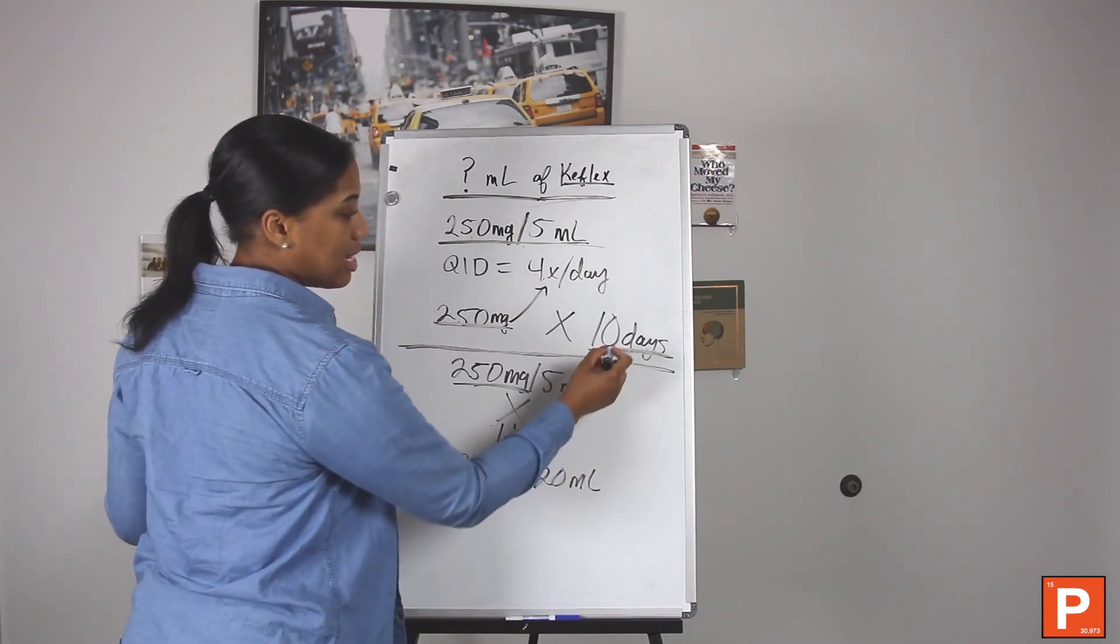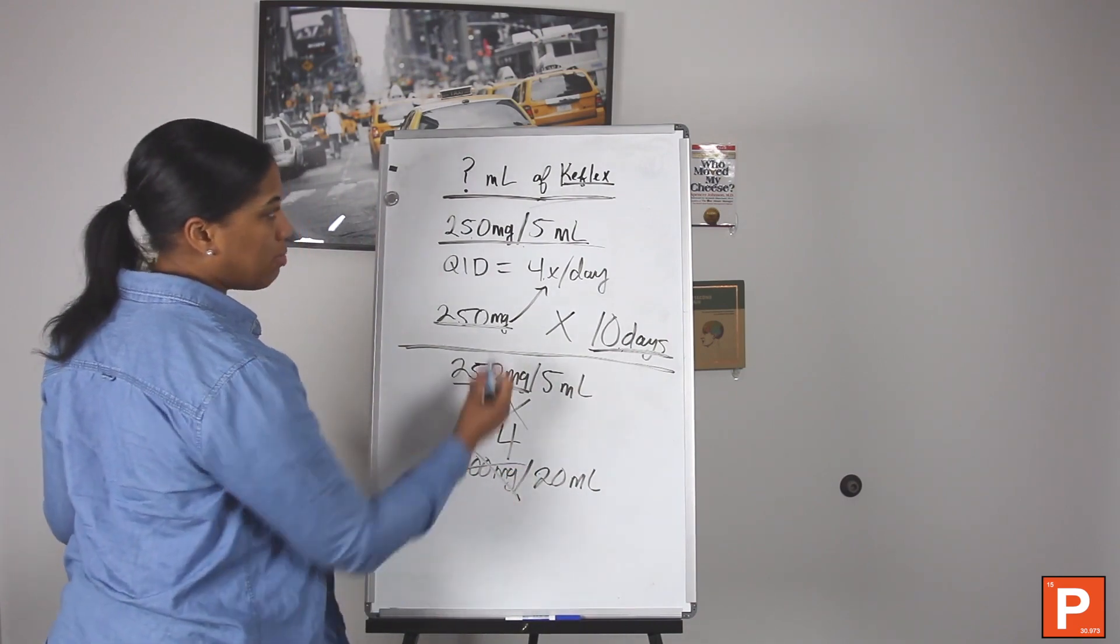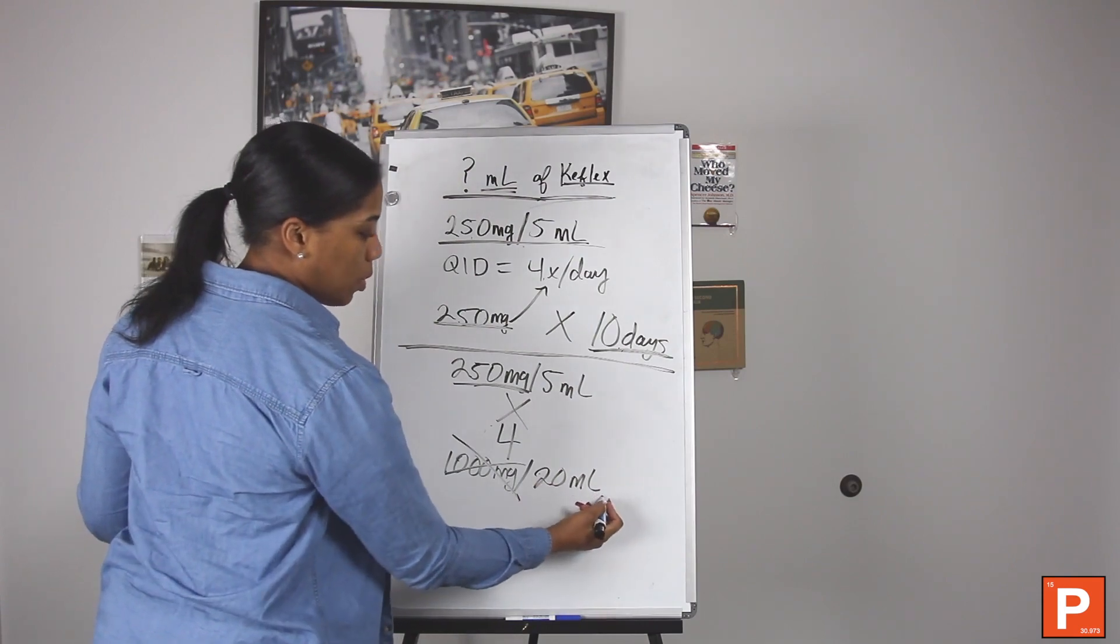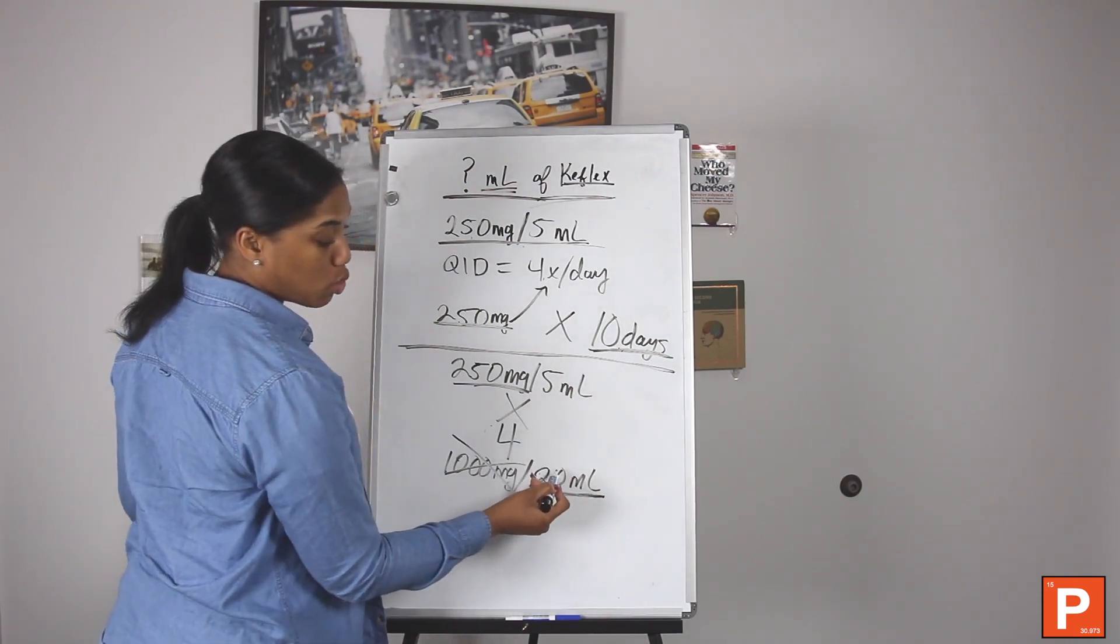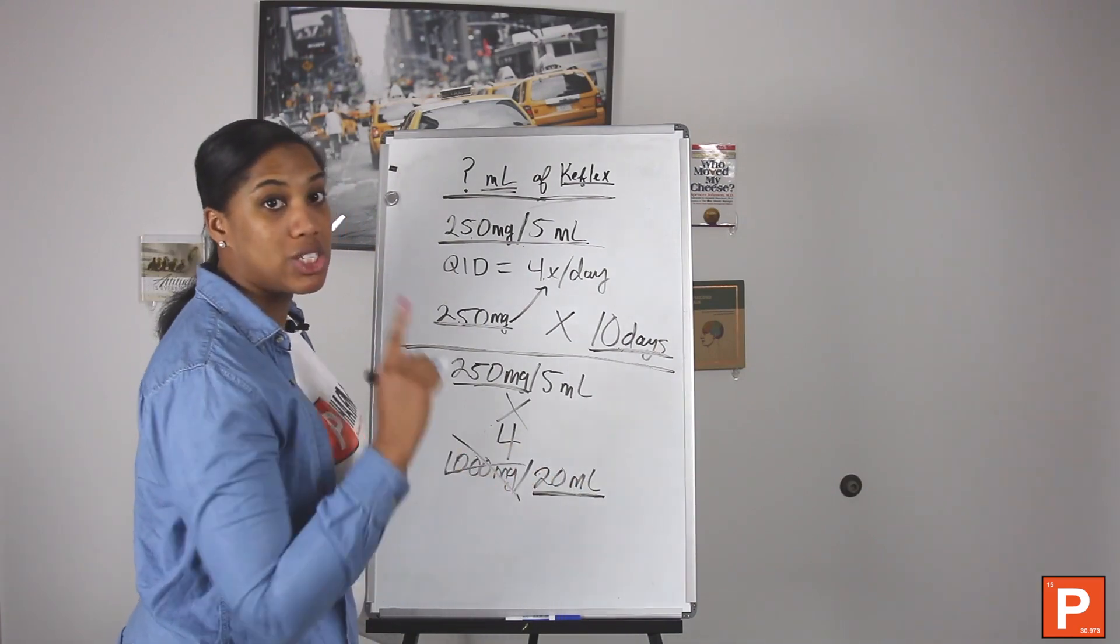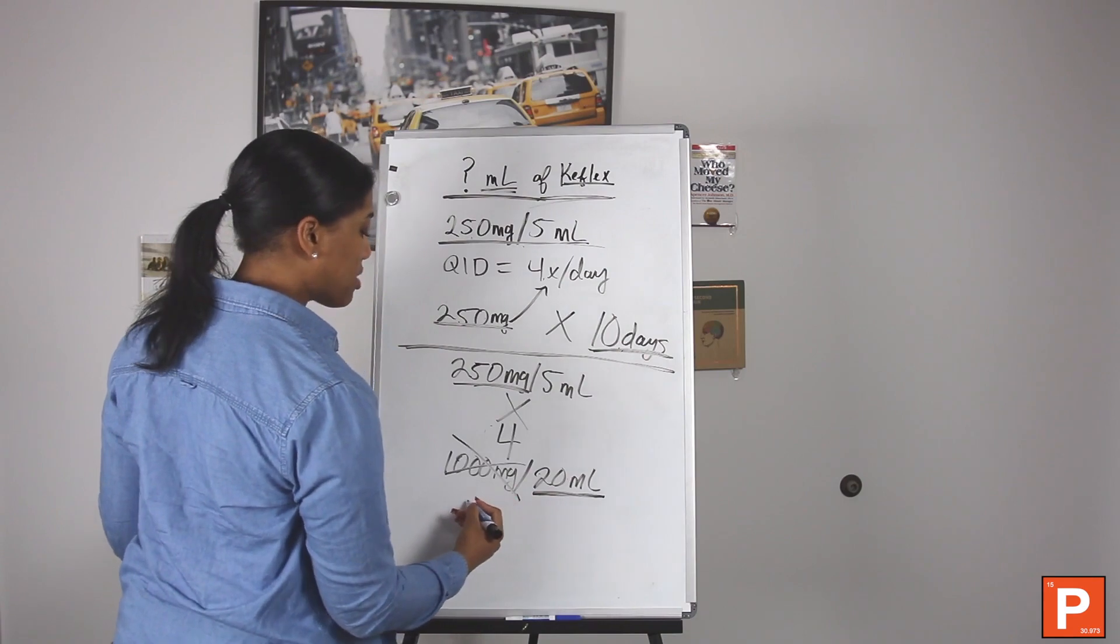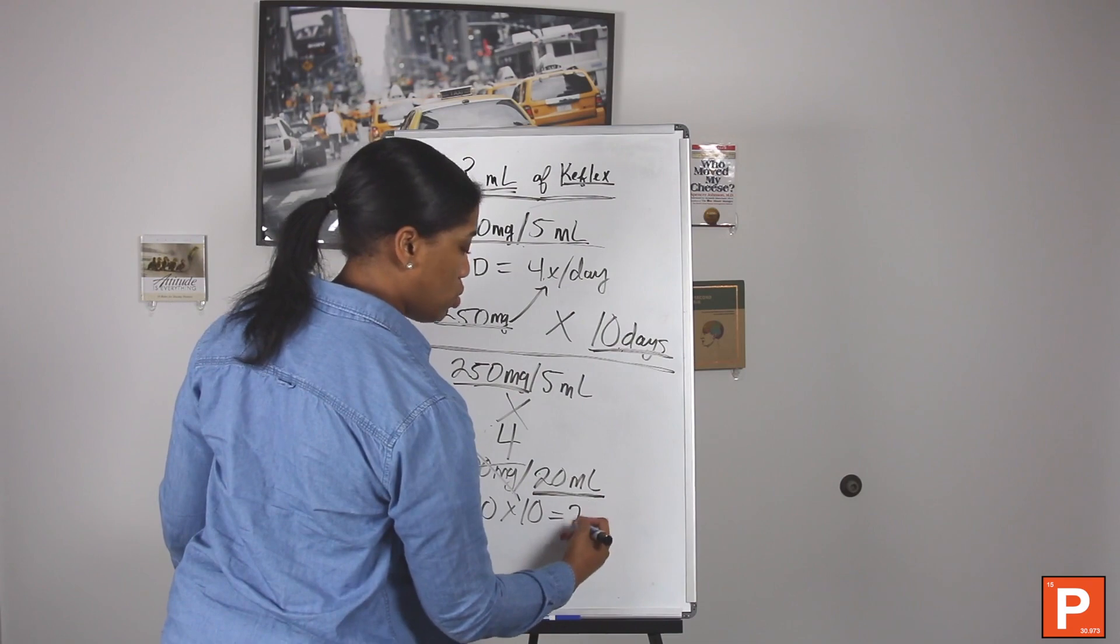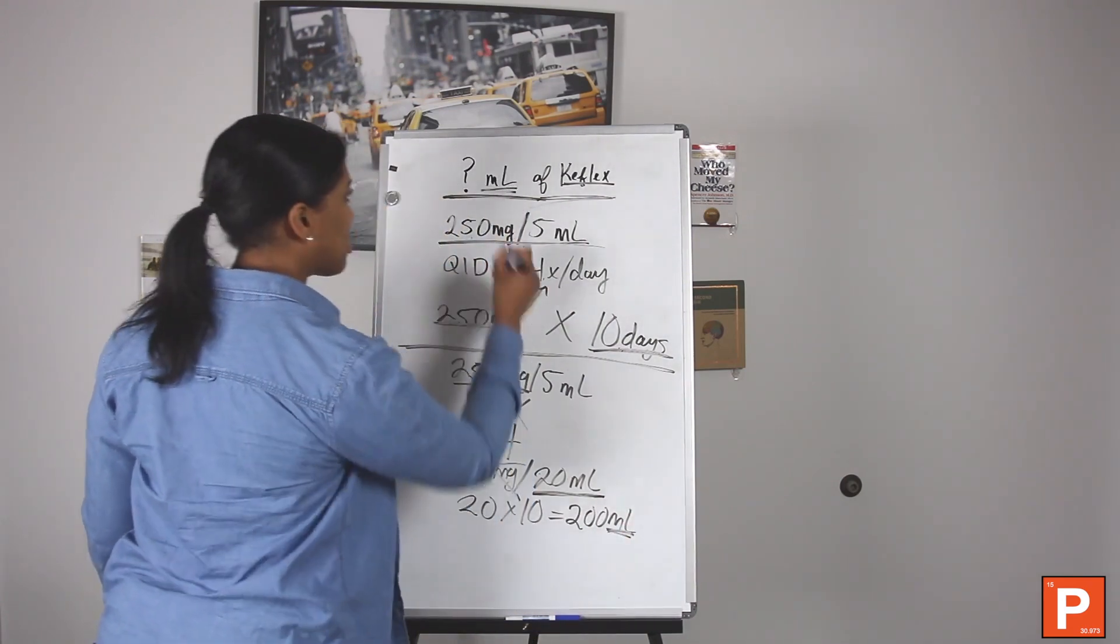This is for how many days? 10 days. So we don't even need this mg anymore because they asked how many milliliters. We would basically take this 20 and multiply it, because this 20 milliliters represents how much the patient needs for one day. Now we need to know how many for 10 days, so basically you would say 20 times 10, and this is going to give you 200 milliliters. Look at your units. Does it match? Absolutely it does.